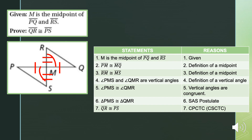Formal proof: statement one, M is the midpoint of line segments PQ and RS — given. Consequence: line segment PM is congruent to line segment MQ, and line segment RM is congruent to line segment MS by the definition of a midpoint. Angle PMS and angle QMR are vertical angles by the definition of vertical angles, and therefore congruent because vertical angles are congruent. Triangle PMS is congruent to triangle QMR by the SAS postulate. Finally, line segment QR is congruent to line segment PS by CPCTC. QED.